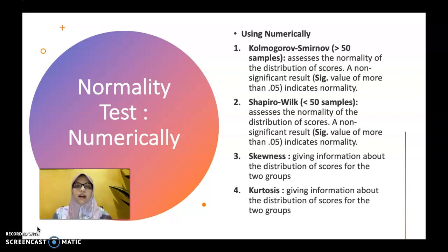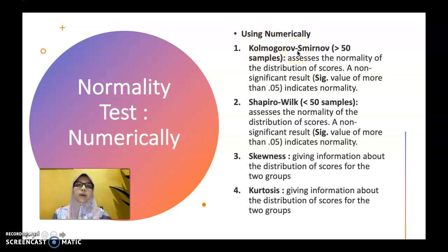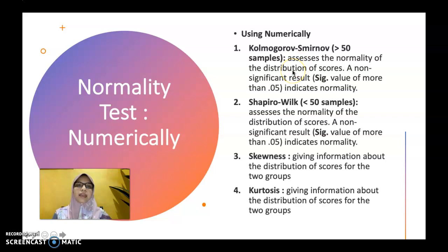The first numerical test is Kolmogorov-Smirnov — this is a person's name, so the K and the S should be in capital letters. It is suitable when the total number of your sample is more than 50. Its function is to assess the normality of the distribution of scores, and a non-significant result should be gained where the significant value should be more than 0.05, indicating that your data is normally distributed.